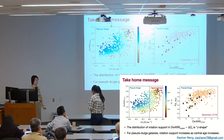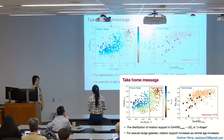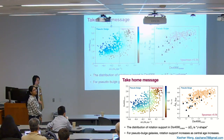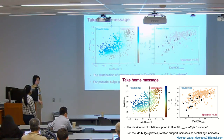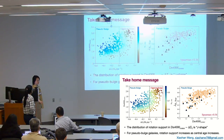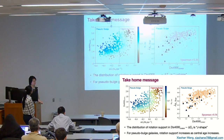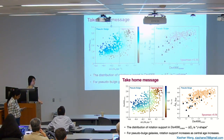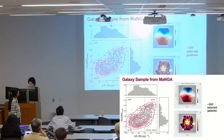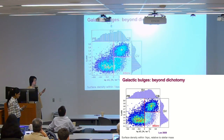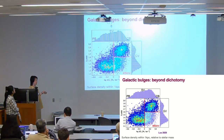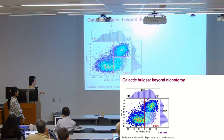Question from audience: As I understand it, your definition of pseudobulges is largely dependent on delta sigma 1, the surface density as a function of total stellar mass. But that's different from Kormendy's definition, which was more dependent on Sersic index — low Sersic index for pseudobulges and high Sersic index closer to four for classical bulges. Can you compare the two? For example, on this figure, do you have a color-coded version of the Sersic index?